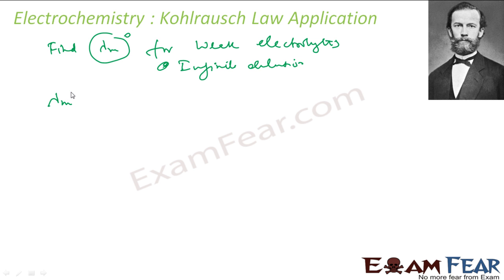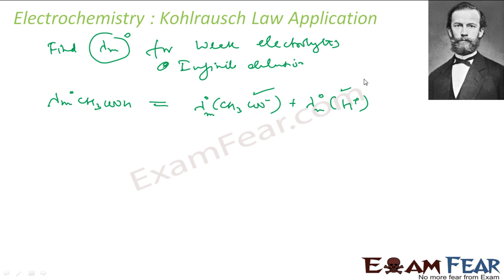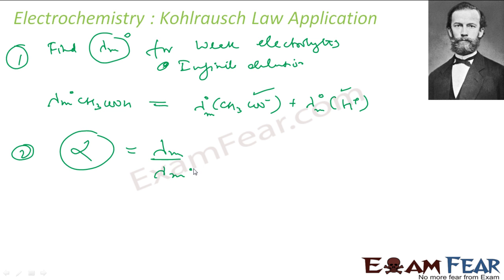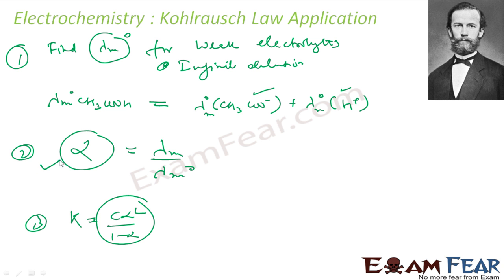For example, if you want to find the molar conductivity of CH₃COOH at infinite dilution, that will be: λm°(CH₃COO⁻) + λm°(H⁺). These values can be obtained from textbooks. That is the first application. The second application is finding the degree of dissociation α, since α ≈ λm / λm°. Once you have α, you can find the equilibrium constant Ka = Cα² / (1−α). So you can find the dissociation constant, equilibrium constant, and the molar conductivity of a weak electrolyte at infinite dilution.